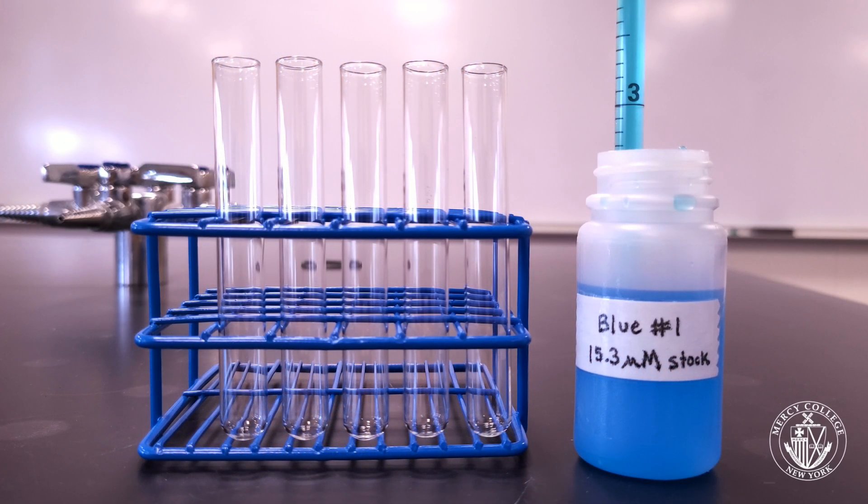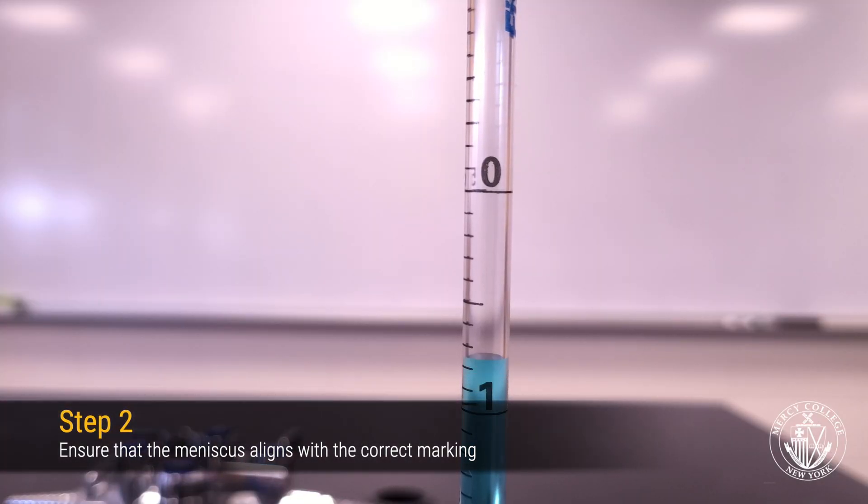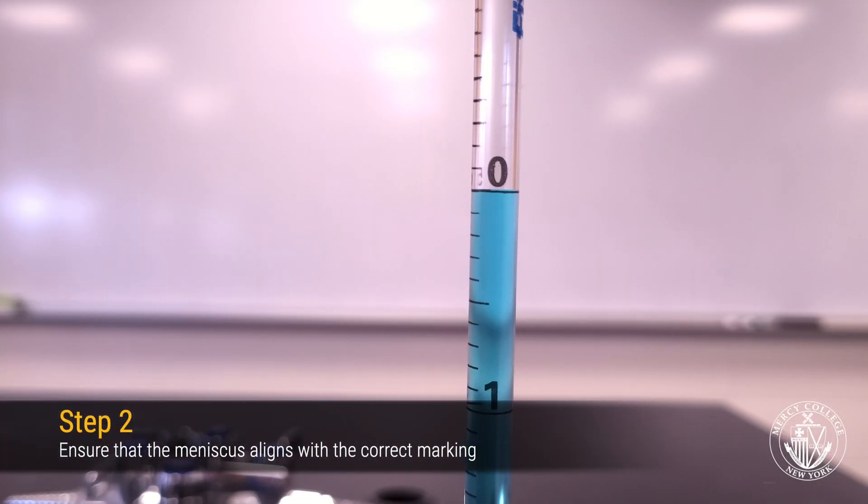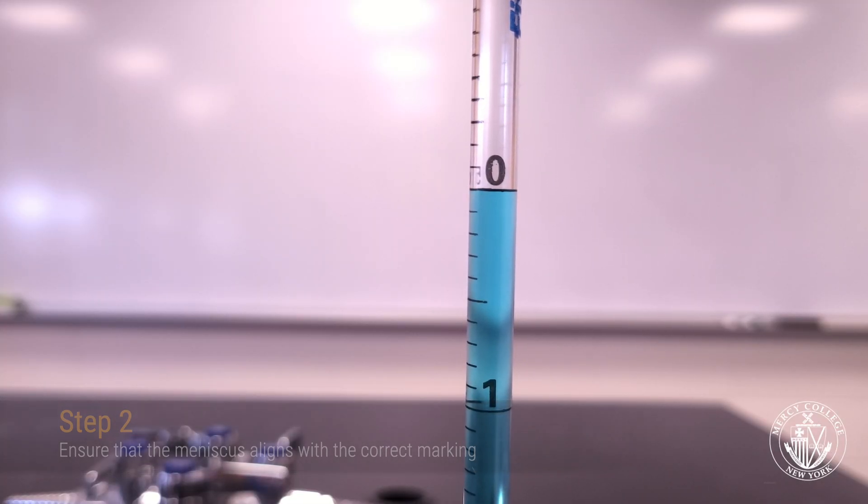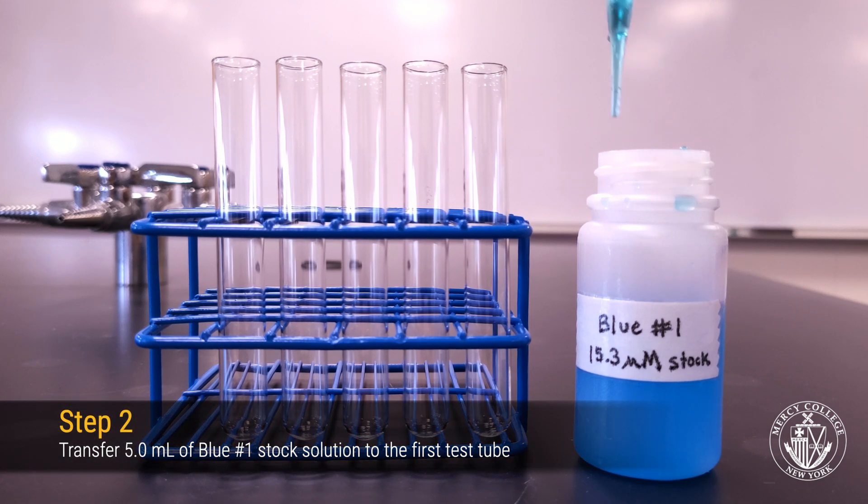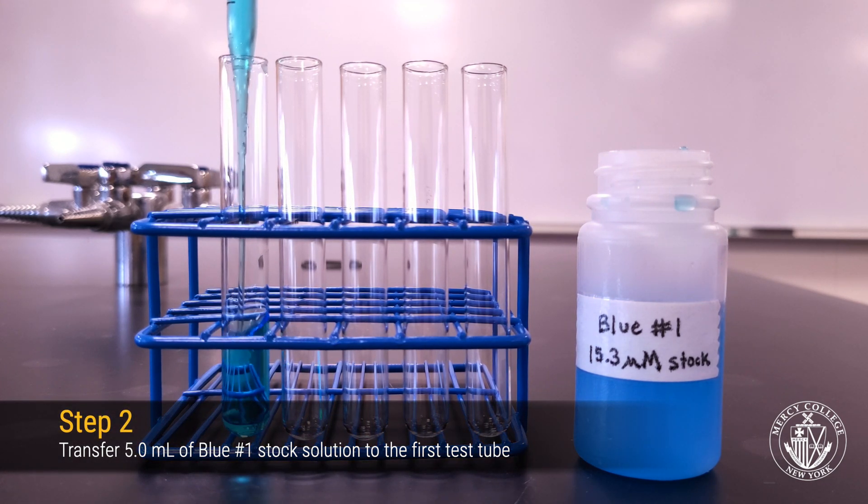For your first standard, draw up 5 milliliters of your blue 1 stock solution, making sure that the bottom of the meniscus aligns with the calibration mark on the pipette. Then transfer the solution to your first test tube.